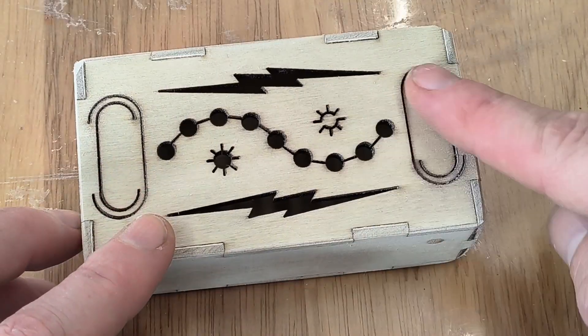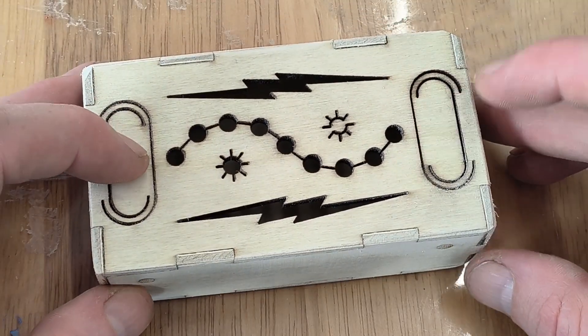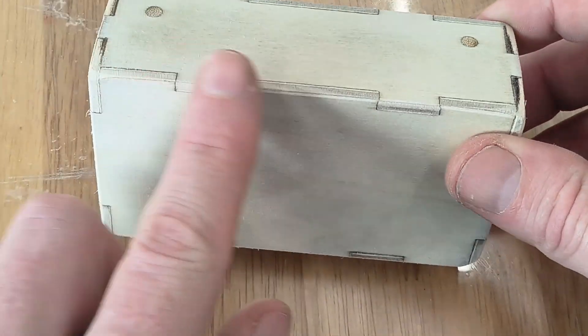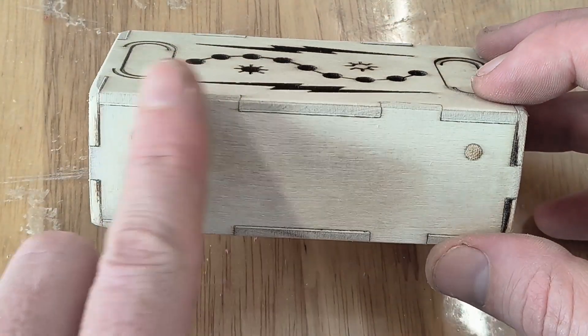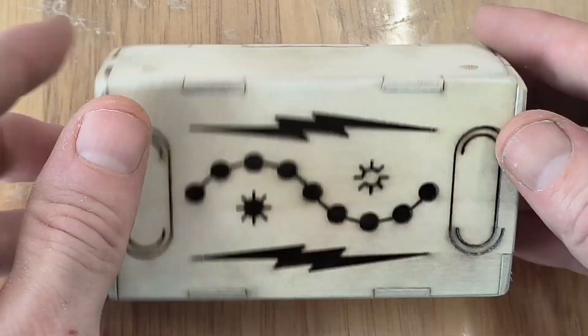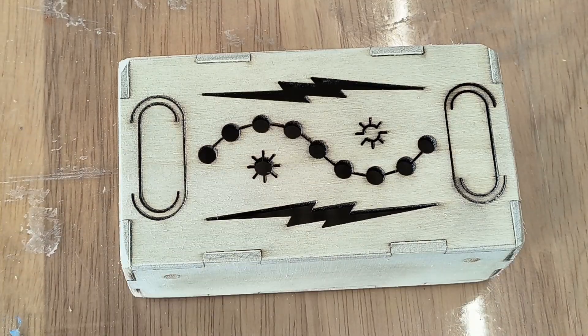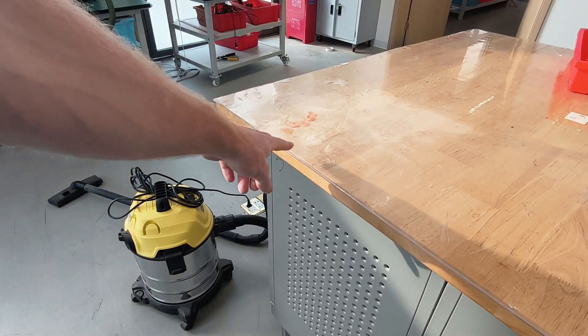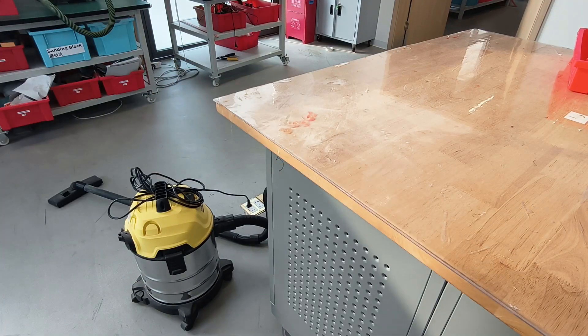And here we go. Here's my nice sanded box here. All the edges are smooth and it's not black anymore. And there we go. Don't forget to clean up your dust from your table.